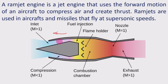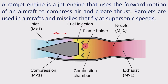As air flows through the passage, its volume decreases, and compression of the air takes place by the aerodynamic design of this engine. The air speed decreases to subsonic speed — during compression, the Mach number becomes less than one. Later, the air enters into the combustion chamber where fuel is injected from the fuel injector, and the already compressed air has higher temperature and pressure.